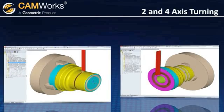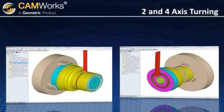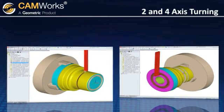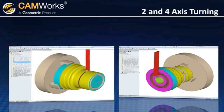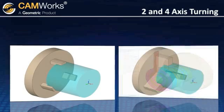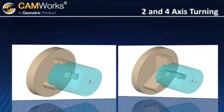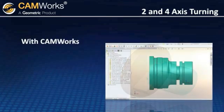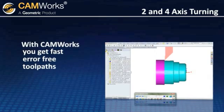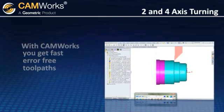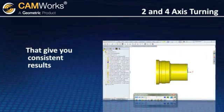Front and rear turret configurations are supported on main and sub spindles. Multiple chuck configurations can be saved and accurately simulated. With CamWorks TURN, you get fast, error-free toolpaths quickly and easily, that give you consistent results.